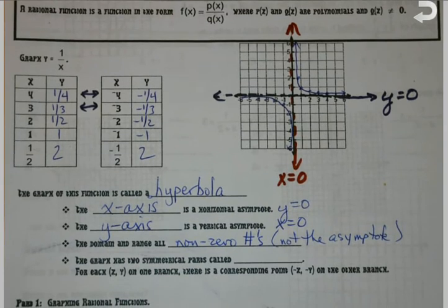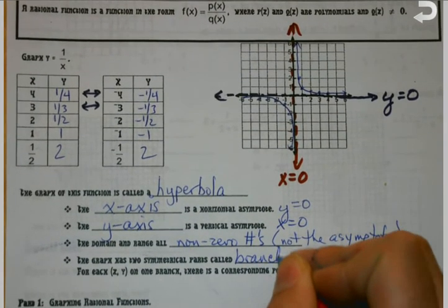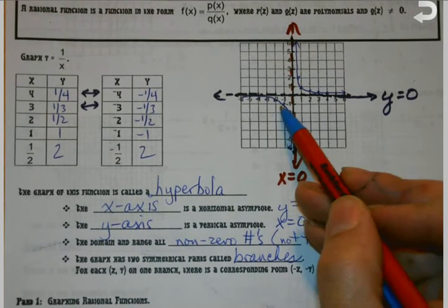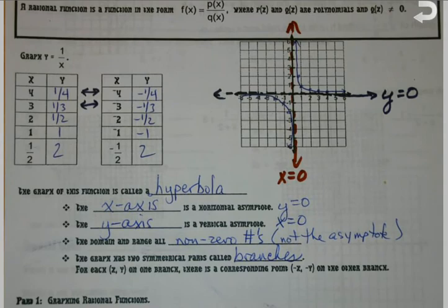And then the graph has two symmetrical parts, two equal parts, that are called branches. And for each part that's in the positive quadrant, there's another part down here in the negative. So let's actually look at one of these.